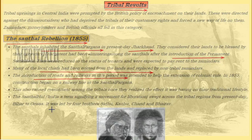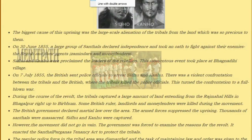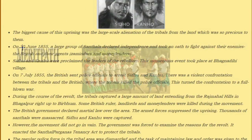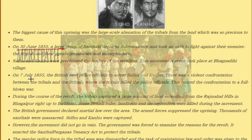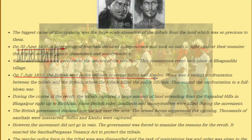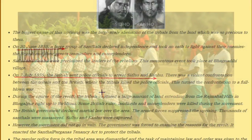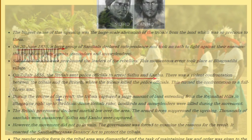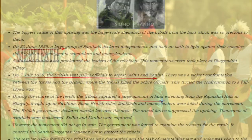Four brothers actually started this movement: Siddu, Kanhu, Chand, and Bairav. On 3rd June 1855, the great movement against the British was started. On 7th July 1855, the British started sending police to capture them and declared them as anti-people acting against the state. During the course of the revolt, the tribals captured a large amount of land belonging to the British.